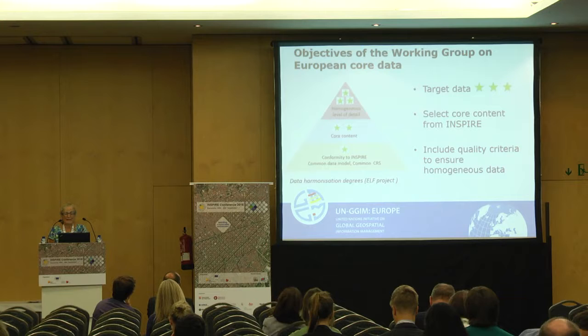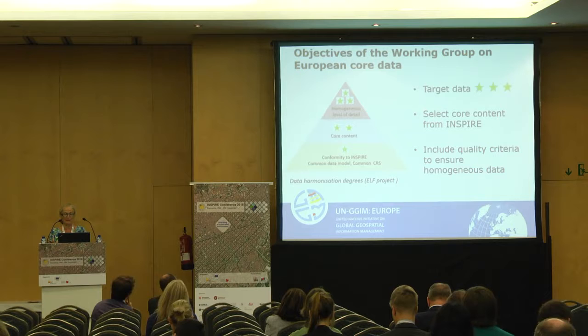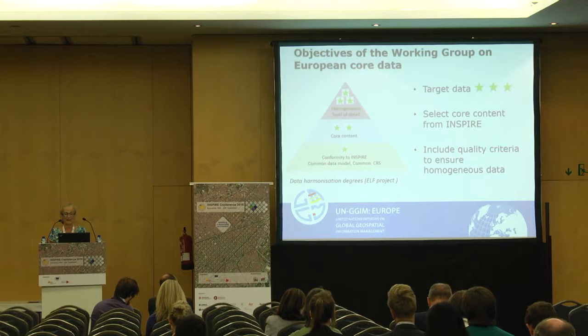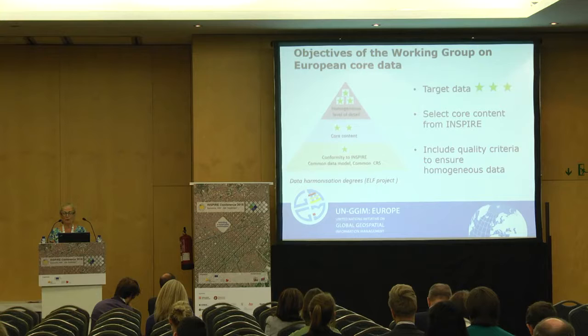You may have already seen this pyramid — it was designed in the HELM project. The first level of harmonization is conformity to INSPIRE: having a common data model and common coordinate reference system. The second level is to have core content — a minimum set of feature types and attributes that are effectively produced and not just empty boxes. The third level is having a homogeneous level of detail. For UNGIM, our target is to get three-star data, selecting core content from INSPIRE and including quality criteria and data capture rules to ensure homogeneous data.